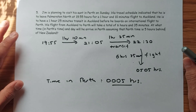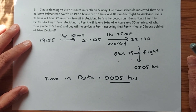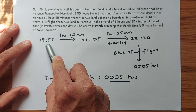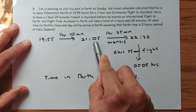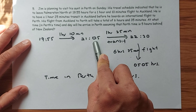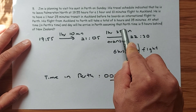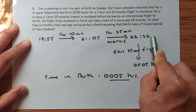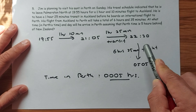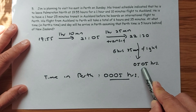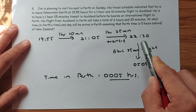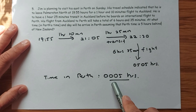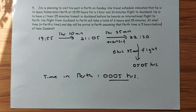The last question is about time. Jim leaves Palmerston North at 19:55 for a one hour 10 minute flight, arriving Auckland at 21:05. After a one hour 25 minute transit, he departs Auckland at 22:30. A six hour 35 minute flight means he arrives at 05:05 New Zealand time. Perth is five hours behind, so subtract five hours — he arrives at 00:05, just past midnight. Make sure you watch the other revision videos for year 9 and year 10 — you should be all good for the coming exam. Cheers everyone, have a good day!